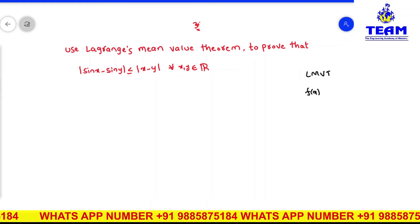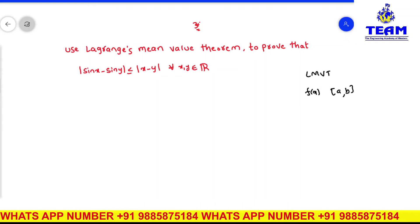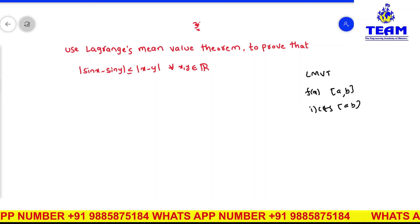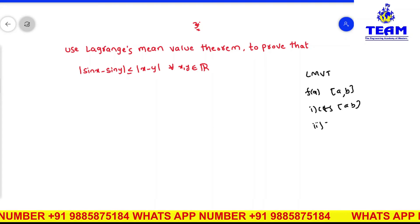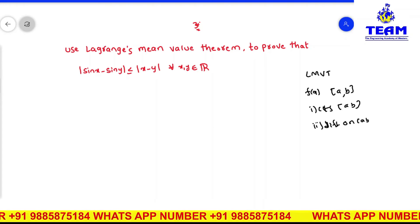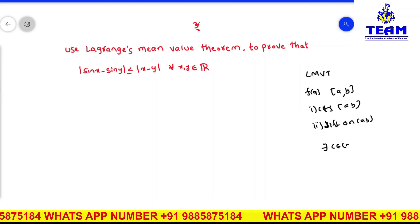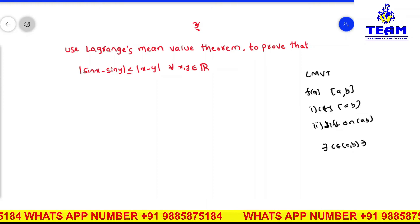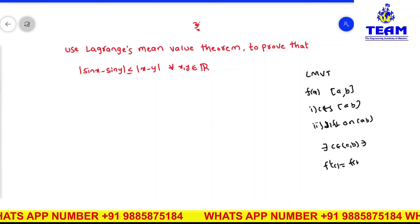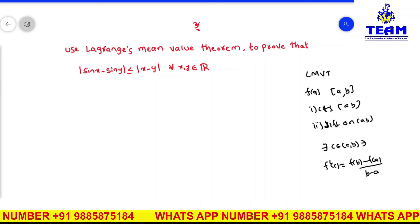If f of x is defined on a closed interval a comma b, which is continuous on closed interval a comma b and differentiable on open interval a comma b, then there exists at least one point c belonging to the open interval a comma b such that f dash of c is equal to f of b minus f of a divided by b minus a. This is Lagrange's mean value theorem.